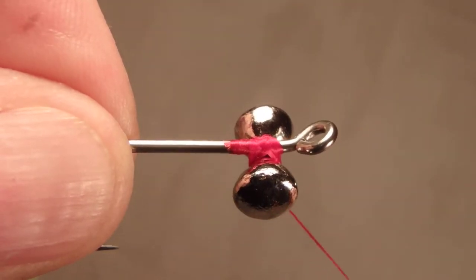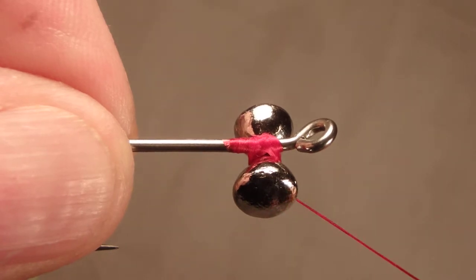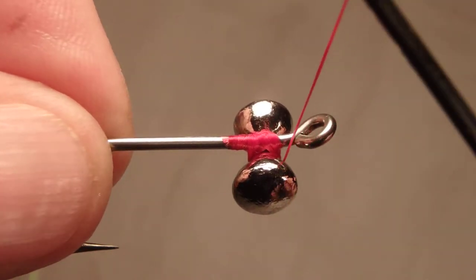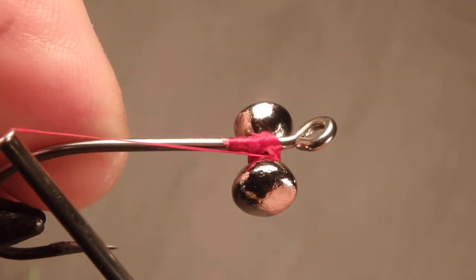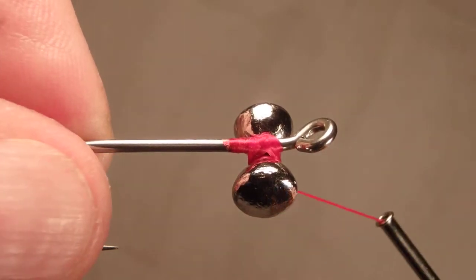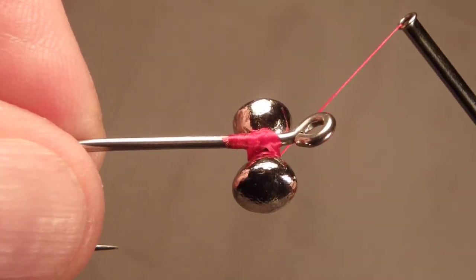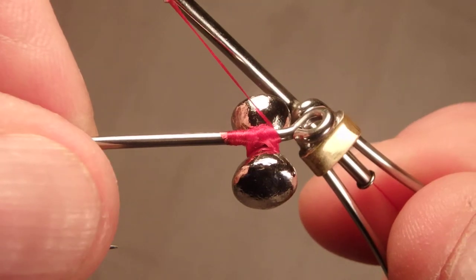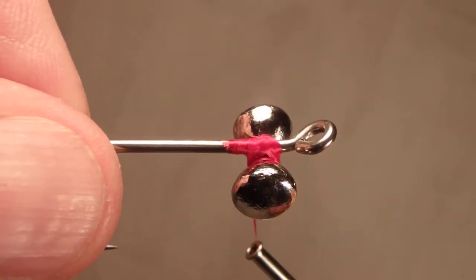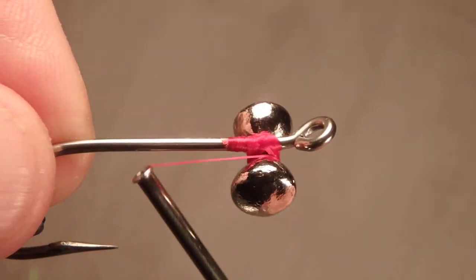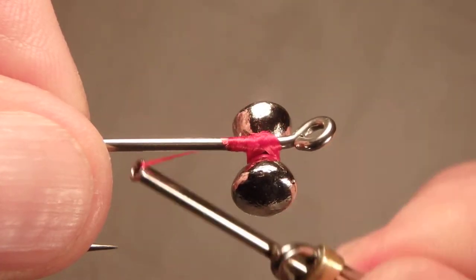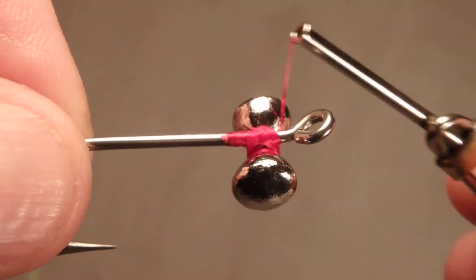But to increase the strength of this lashing, I use a figure-eight lashing. Go over the barbell and under the hook. Over, under, over, under, over, under. Do this six or eight times.